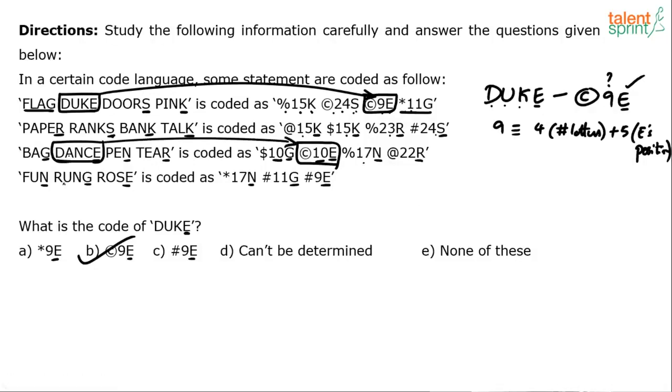What is the code for rung? R, U, N, G. G is 7th position and there are 4 letters. 7 plus 4 is 11. So now based on the number also I can find out the codes. For paper, R is the 18th letter and paper has got 5 letters. 18 plus 5 is 23.